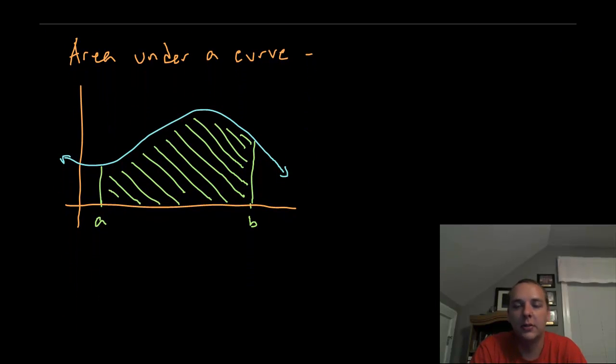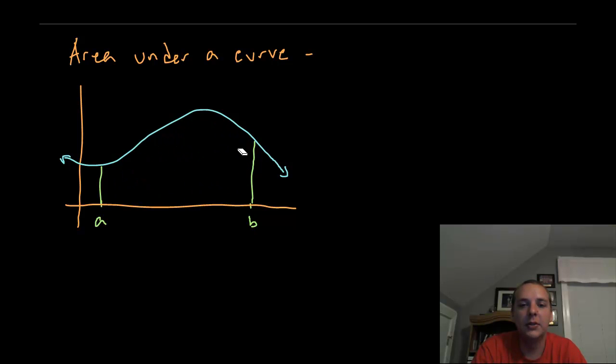The second big question studied in Calc 1 is how do you find the area under a curve from one point to another? Well obviously for most functions there's no nice geometric shape, it's not a box, it's not a triangle, it's not a trapezoid. So usually if it has a smooth top we're pretty much stuck. So one idea would be to break this up into intervals.